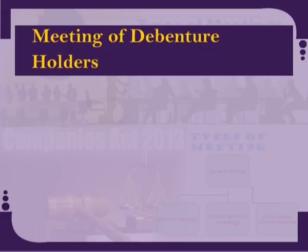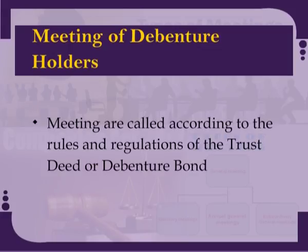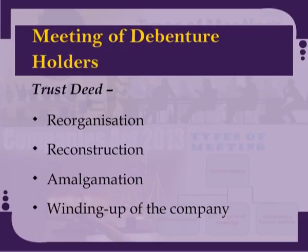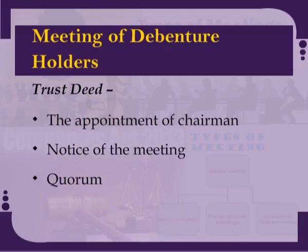Meetings of debenture holders are called according to the rules and regulations of the trust deed or debenture bonds. Such meetings are held from time to time where the interest of debenture holders are involved at the time of reorganization, reconstruction, amalgamation or winding up of the company. The rules regarding the appointment of chairman, notice of the meeting, quorum, etc. are contained in the trust deed itself.